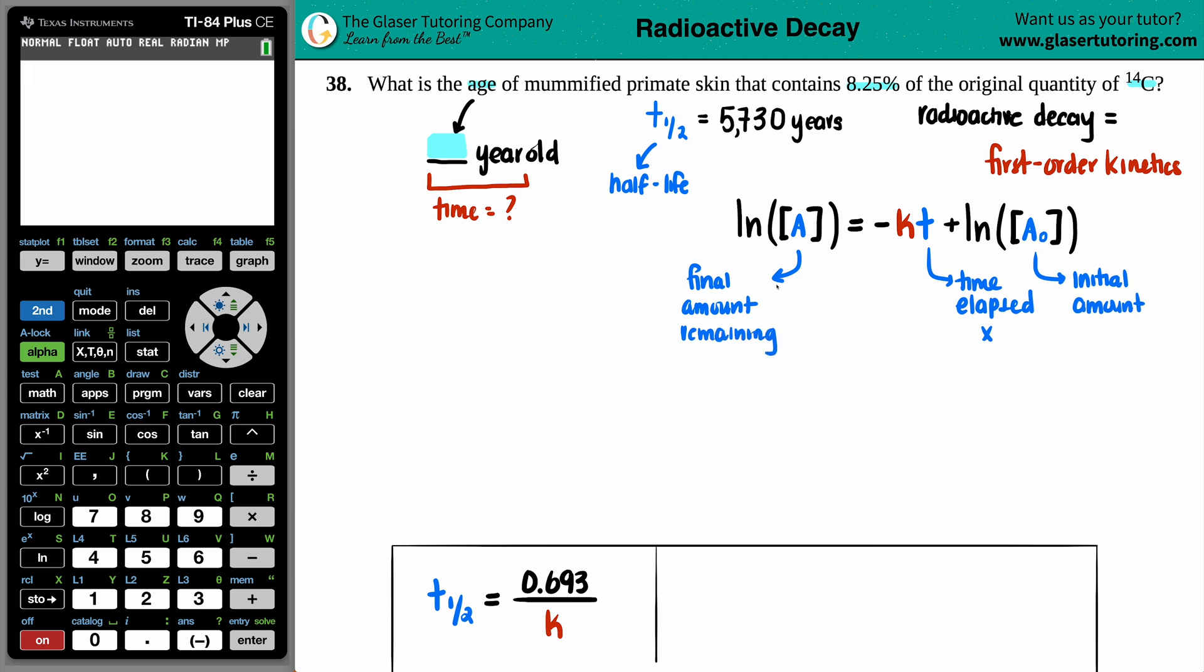So if it says that at the end of the day, we're only containing 8.25% of the original quantity, that's how much that's remaining. So I know that this number is going to be 8.25%. So they didn't tell me the initial amount, but we're dealing in percents. So what's the full total percentage of anything? It's always out of 100%. So we know that this is going to be 8.25. This is going to be 100.